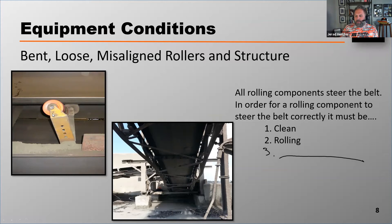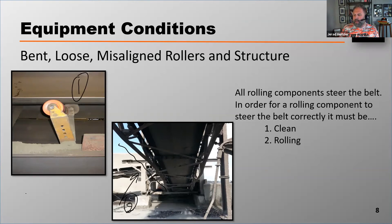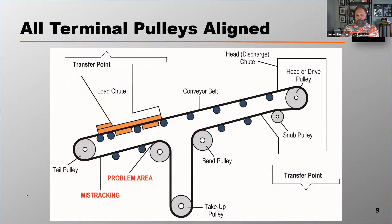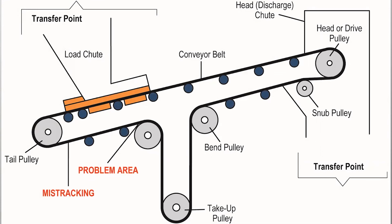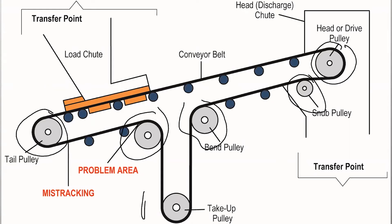If I've got rollers that are out of alignment, as in photo one, or if I've got structure misalignment like in photo two, then I'm going to cause that belt to mistrack. We've got to make sure all pulleys are aligned — and when I say pulleys, we're really talking specifically about what we call terminal pulleys. The terminal pulleys on a conveyor include the tail pulley, the head pulley, a snub pulley if there is one, bend pulleys, and the take-up pulleys. These pulleys must all be aligned, or that belt is not going to track properly.